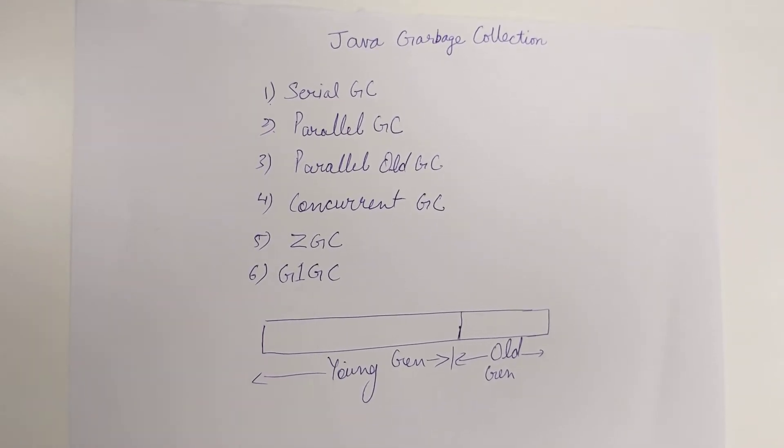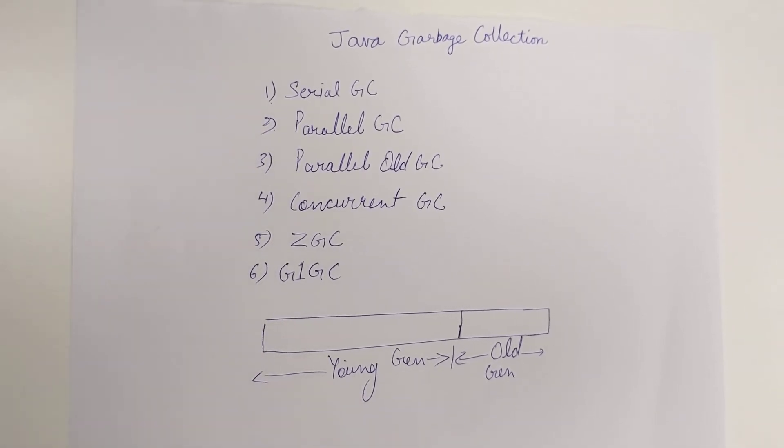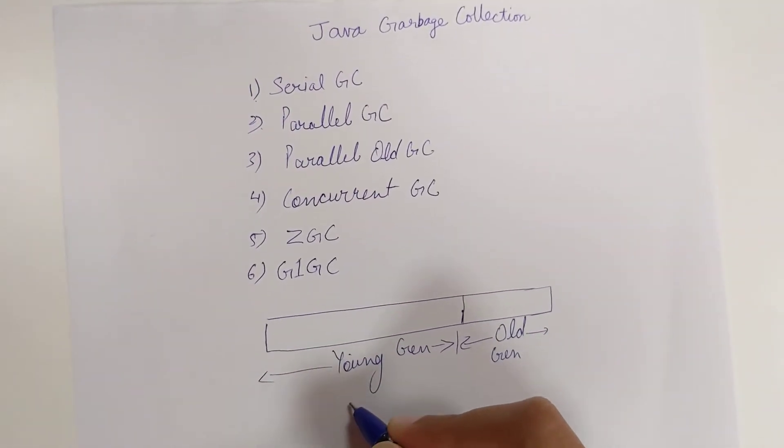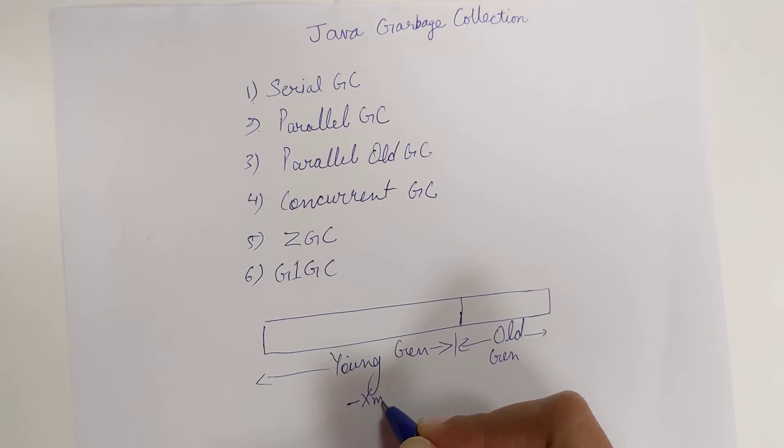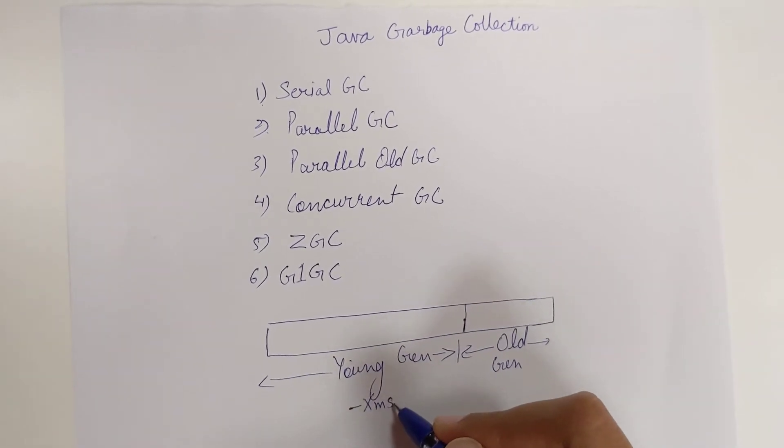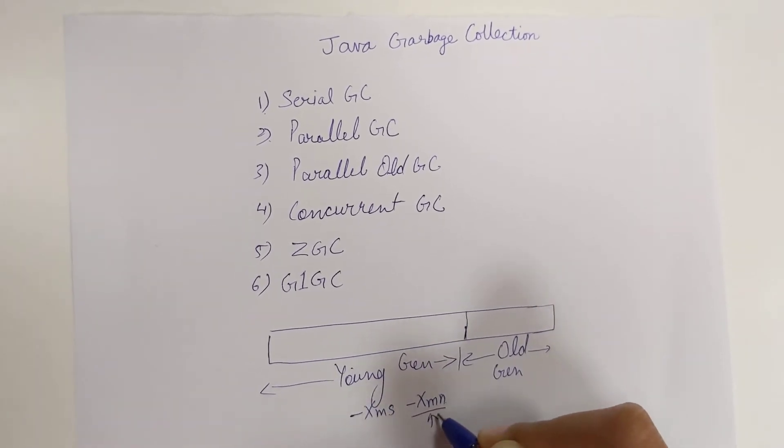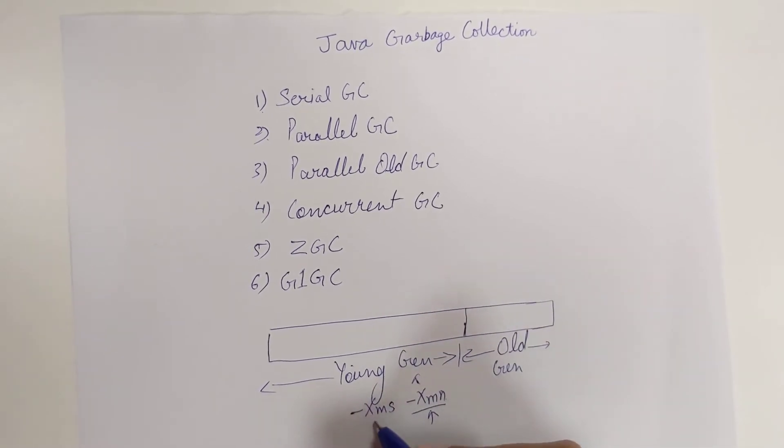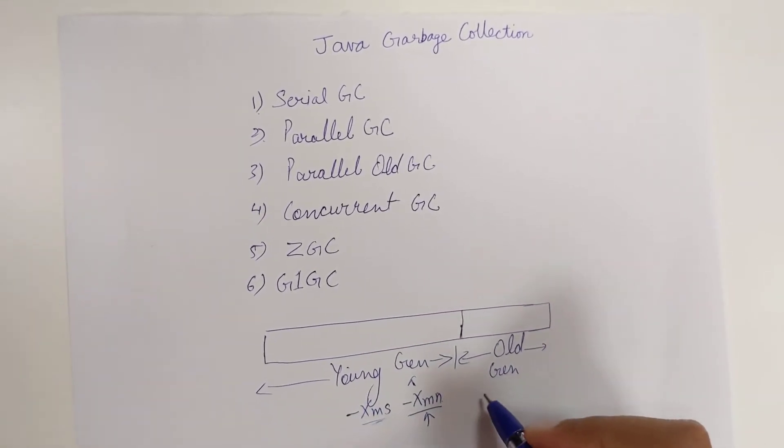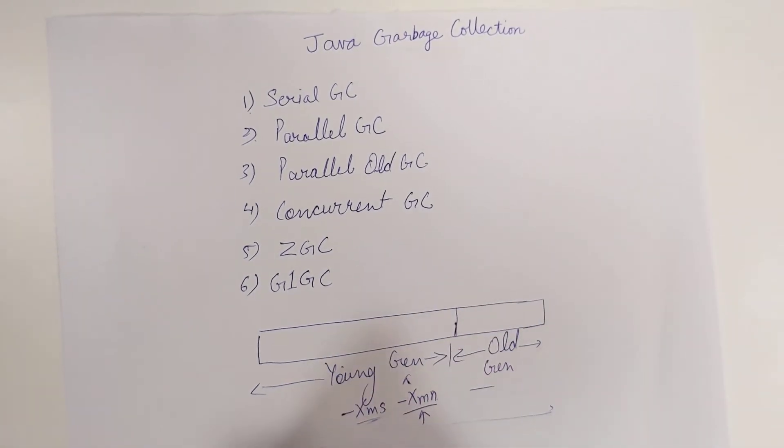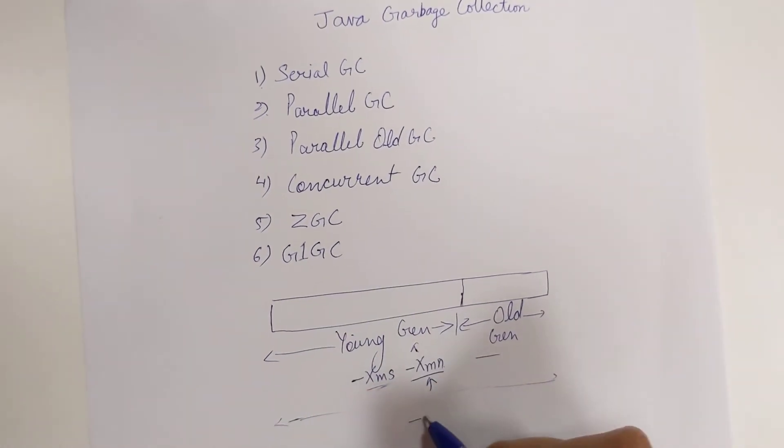When you specify the heap size for a Java program, this is your young generation in which you can specify the size by XMN. This is the size defined for young generation, the initial smallest size. And this is the old generation size, which is the complete size given as XMX.